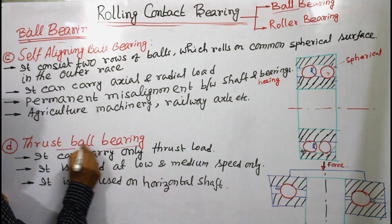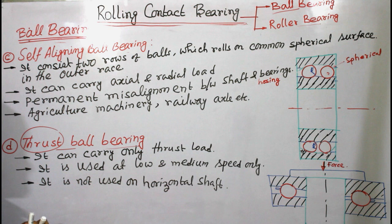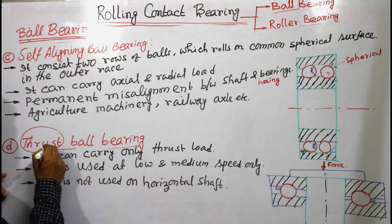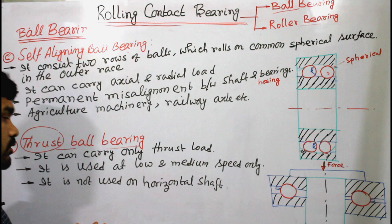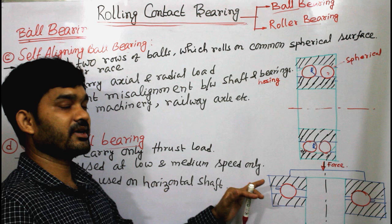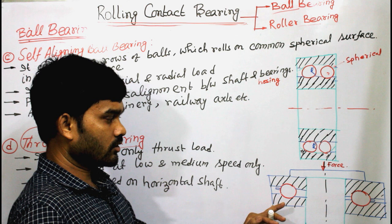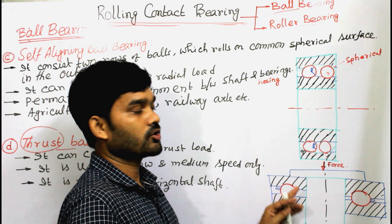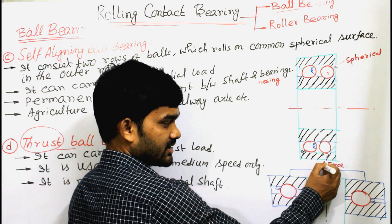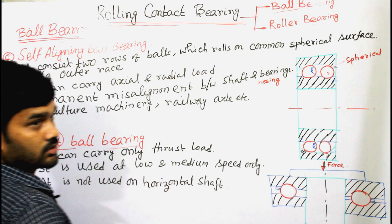The fourth type is the thrust ball bearing. As the name indicates, it carries only thrust or axial load. These bearings are used for low and medium speed applications only, and since they carry only axial load, they are used exclusively for vertical shafts, not horizontal shafts. In the next lecture, we will discuss roller bearings.